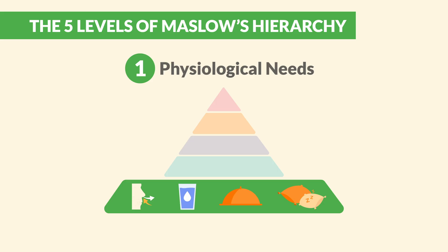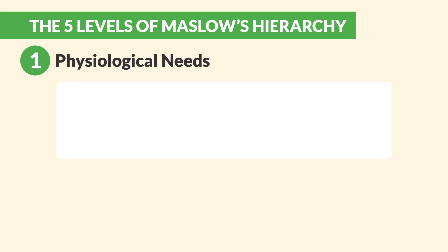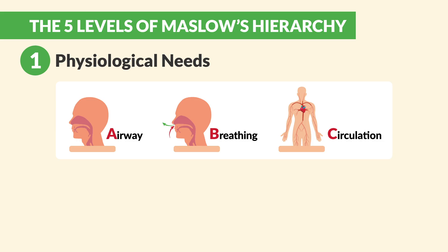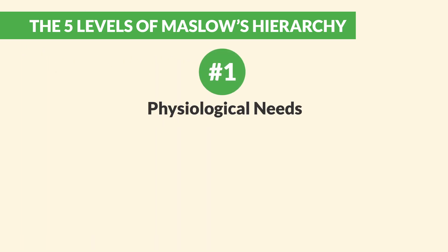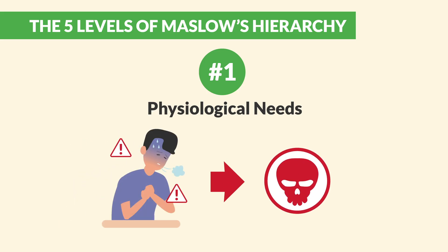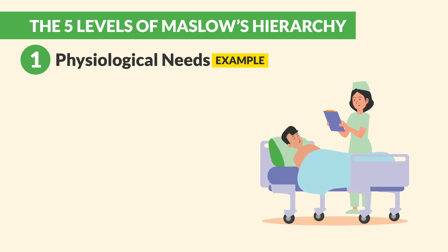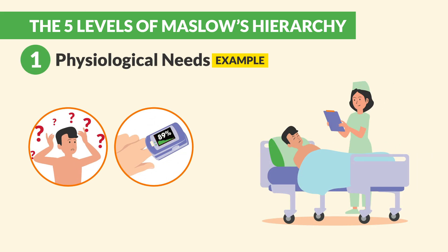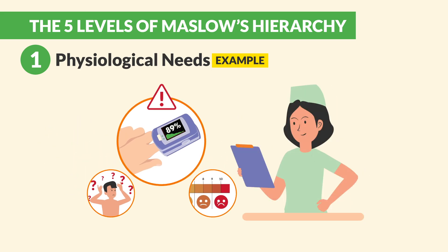Starting at level one, physiological needs, or basic survival. This is the foundation. These are needs like ABCs — airway, breathing, and circulation. Also food, water, and sleep, as well as elimination, temperature regulation, and oxygen. In nursing, physiological needs always come first. If your patient can't breathe, they won't survive long enough to worry about anything else. For example, you're caring for a post-op patient. They're confused, and they have an O2 saturation of 89%, well below normal, and they're complaining of pain. So what is your priority? In this case, it should be airway and oxygenation.